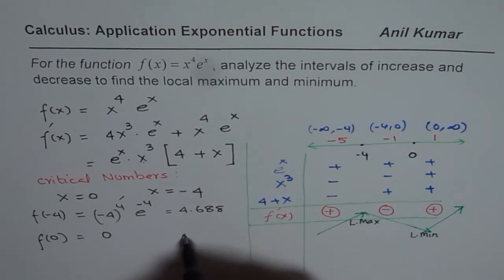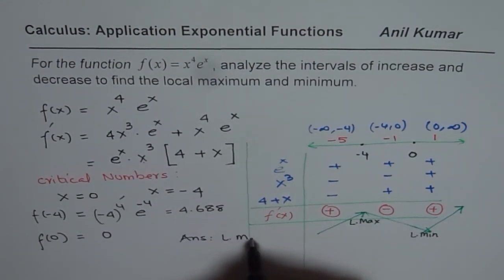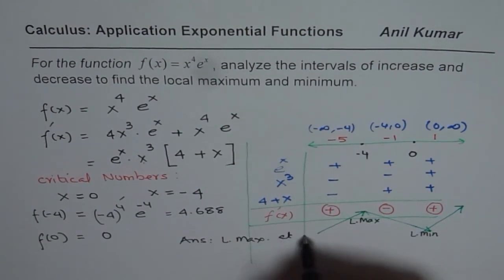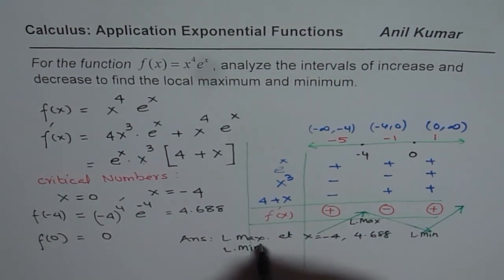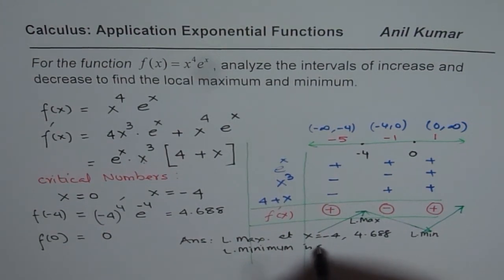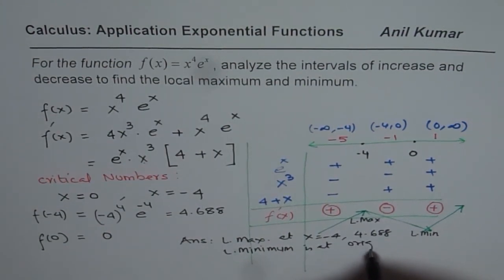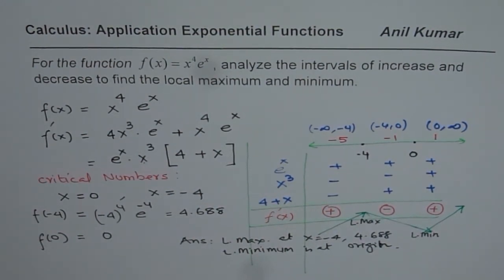So that is our answer: local maximum at x = −4 with a value of 4.688, and local minimum at the origin, x = 0, with a value of 0. I hope this video helps you clearly understand how to analyze the first derivative to find intervals of increasing and decreasing, which gives you local maximum and minimum. Thank you and all the best.